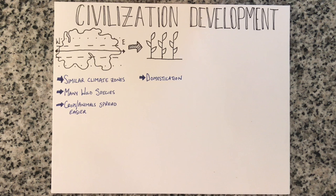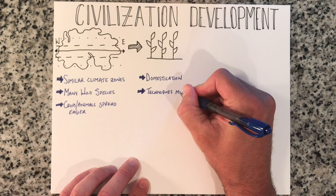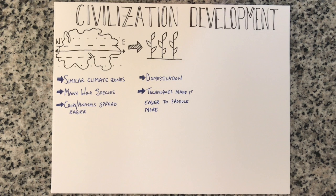As all people in the area start to domesticate the same plants and animals, they start to share their techniques of farming. As they continue to collaborate, improvements are made to the techniques and make it easier to produce larger numbers of these crops.